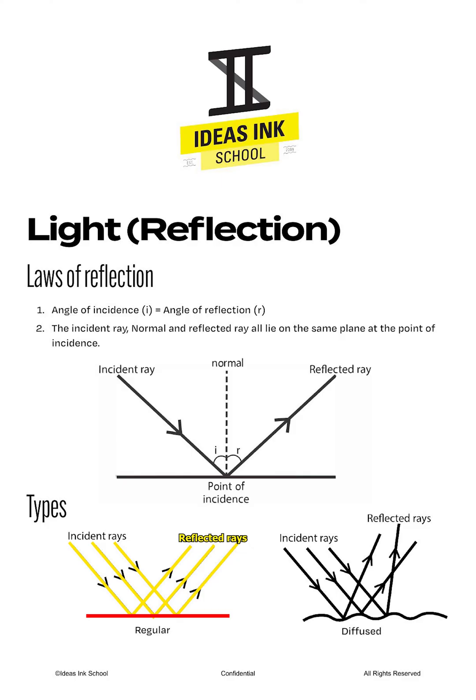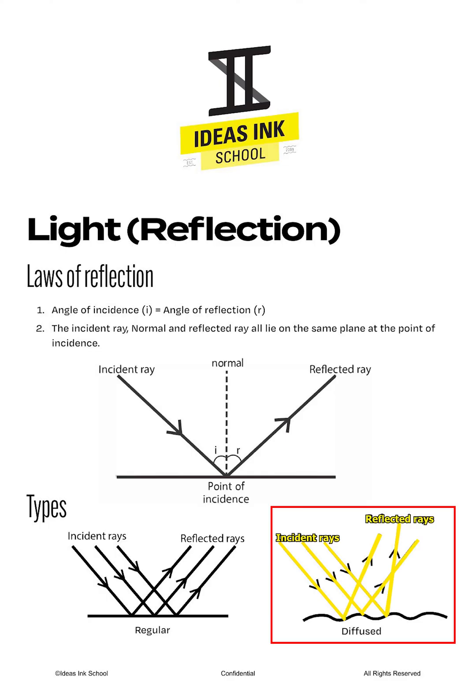The other type of reflection is known as diffuse or scattered reflections. This occurs when parallel rays of light fall onto a rough surface instead. Since the incident rays strike the uneven surface at different angles of incidence, the reflected rays produced will end up going in many different directions. But regardless, please note that the laws of reflections are still being obeyed. Take a look at the diagram to have a better understanding.